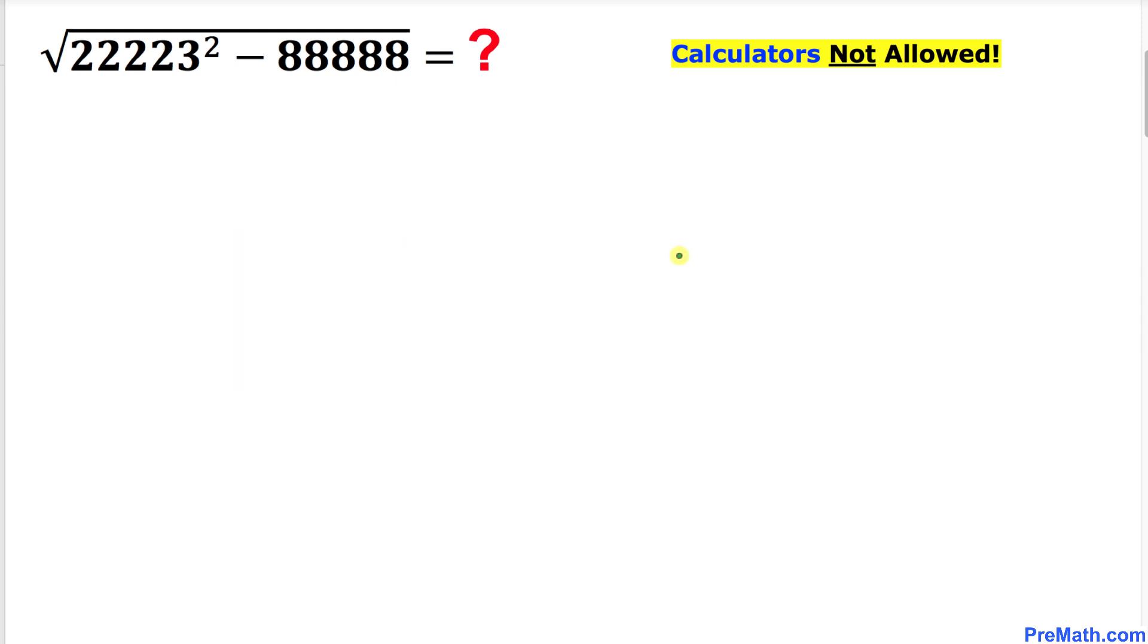So let's go ahead and get started with the solution and let's focus on this left hand side. I have copied it down and let's focus on this part, 22,223. This could be written as 22,222 plus 1.